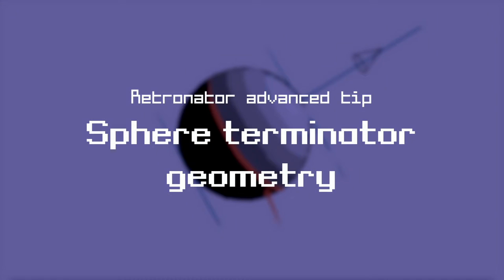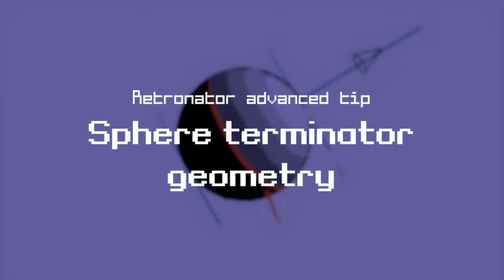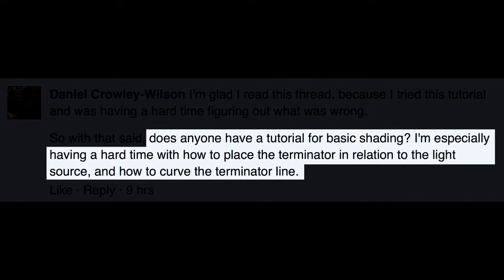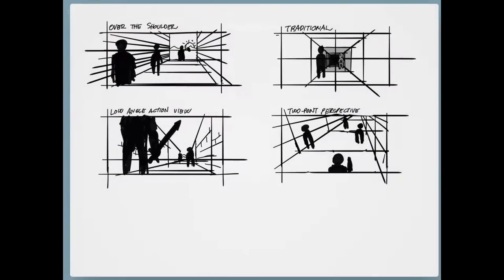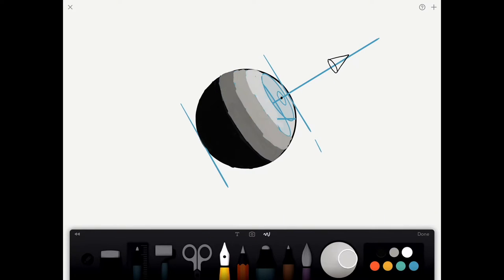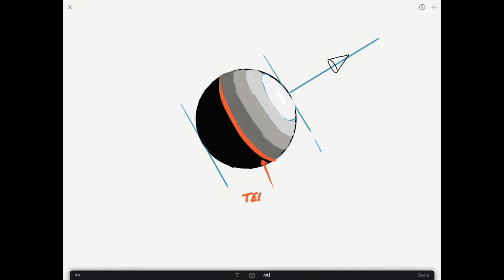Hello and welcome to yet another advanced tips. Daniel asks, does anyone have a tutorial for basic shading? I'm especially having a hard time with how to place the terminator in relation to the light source and how to curve the terminator line. For anyone that doesn't know what a terminator is, it is the edge between the light and the dark side on a sphere.